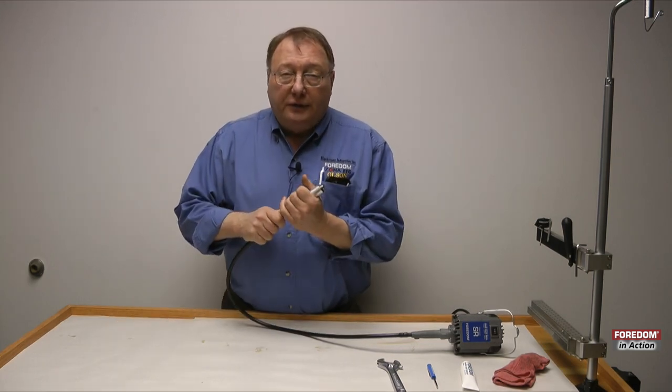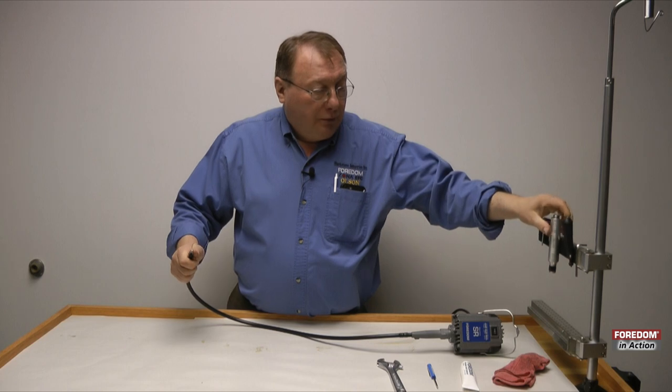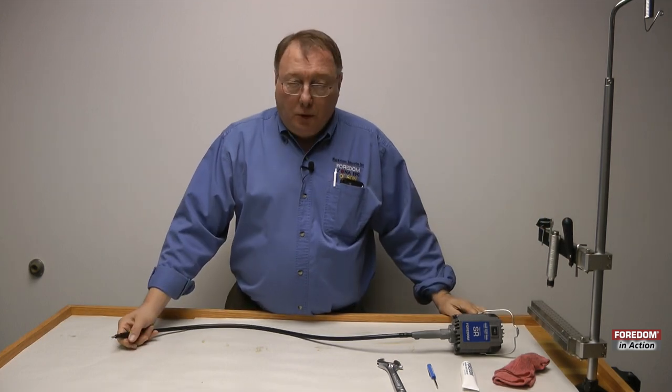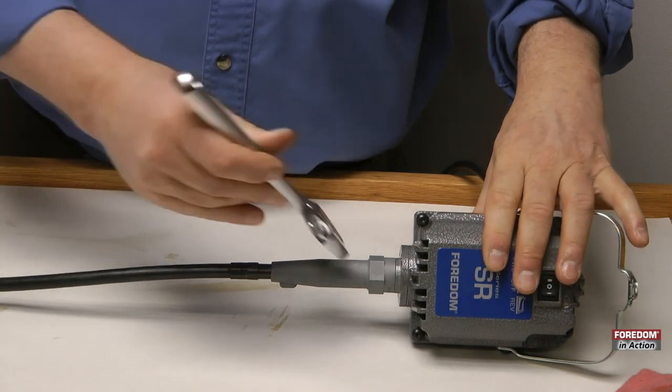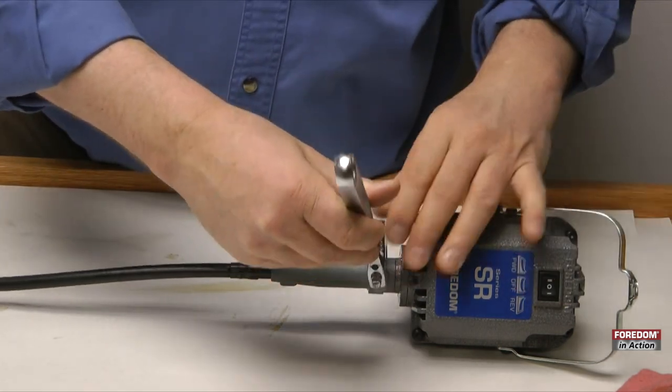What you want to do is take your handpiece off, unplug your motor from the speed control, take your 1-inch crescent wrench, and loosen the motor connector.